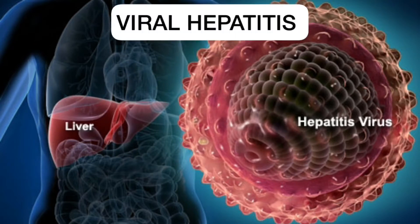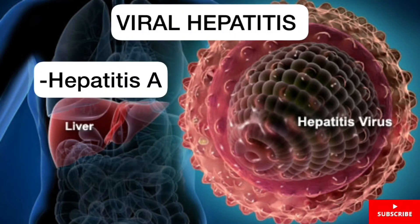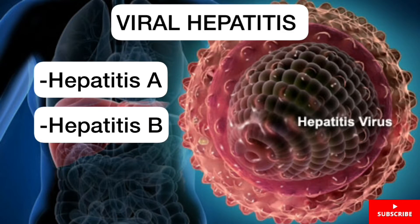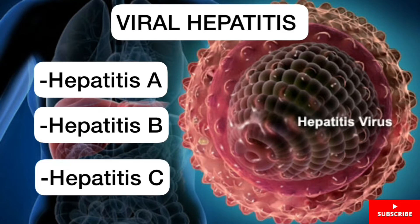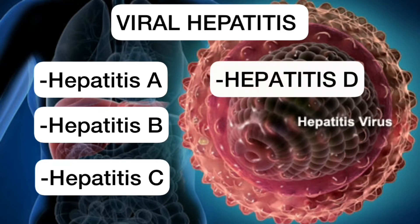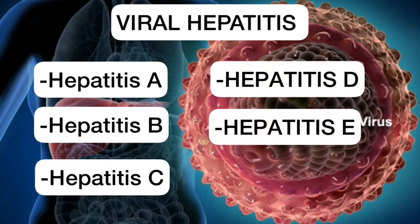Let's take a look at the various types of viral Hepatitis. We have five different types of viral Hepatitis: Hepatitis A, Hepatitis B, Hepatitis C, Hepatitis D, and Hepatitis E.